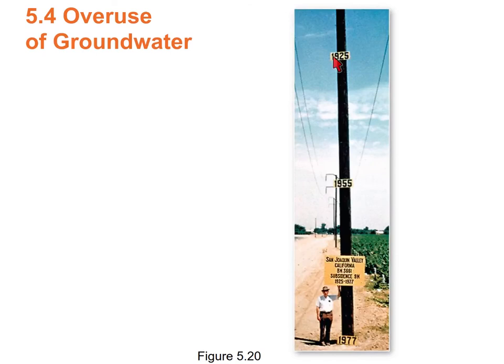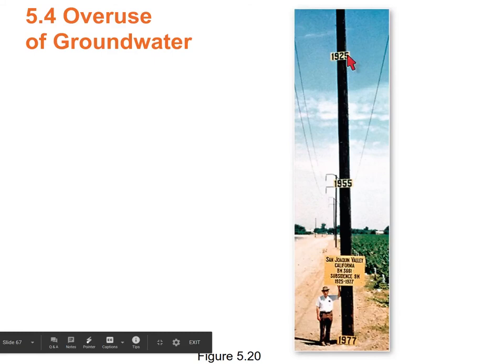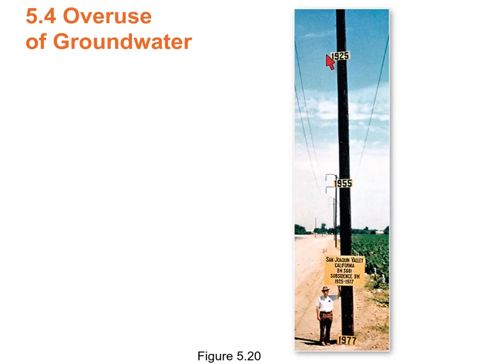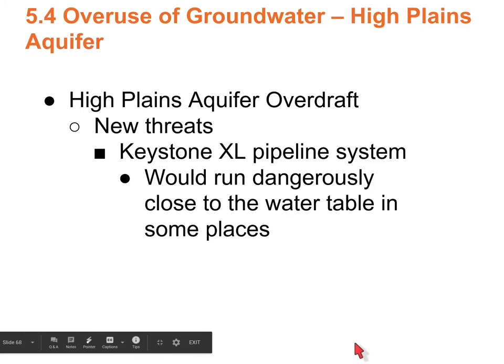Here's one of my favorite pictures. This is showing the level of the ground. If we were here in 1925, this ground would have been at this level. From 1925 to 1977, so much water was pumped out of the San Joaquin Valley that the land has actually sunk dramatically.